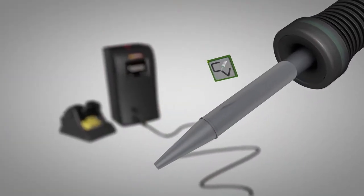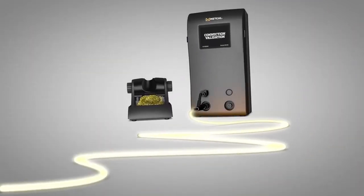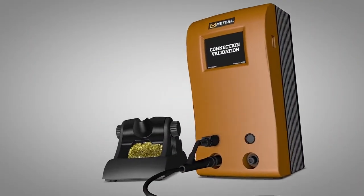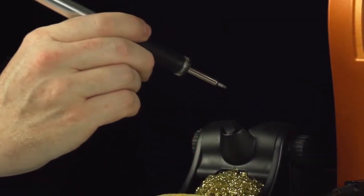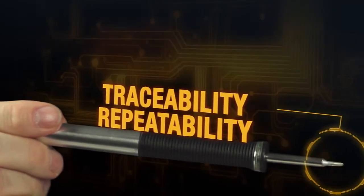Using patented chip and cartridge technology, the Metcal Connection Validation system enables bi-directional communication between the cartridge and the power supply. This innovative chip and cartridge technology delivers traceability information to the user.